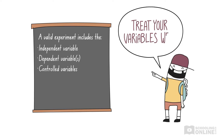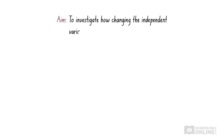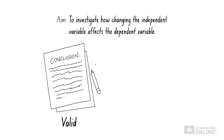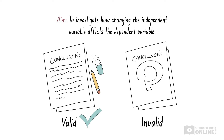The independent variable is what we change in our experiment, the dependent variable is what we measure, and the controlled variables are what we keep the same across all trials. The aim of a science experiment is to see how changing the independent variable affects the dependent variable. If our experiment is valid, we can draw meaningful conclusions. If it is invalid, we cannot make a formal conclusion because other variables may have affected the results.